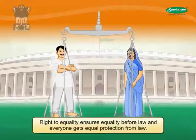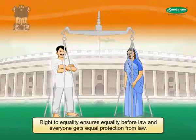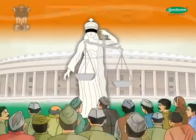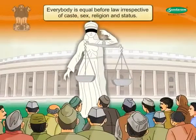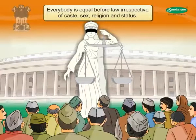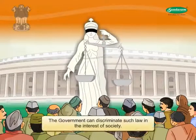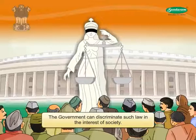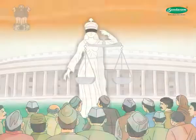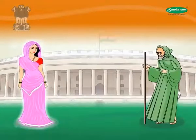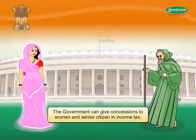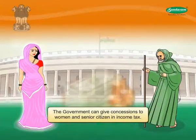Right to equality ensures equality before law and everyone gets equal protection from law. This implies that everybody is equal before law irrespective of caste, sex, religion, and status. However, in exceptional cases, the government can make distinctions in law in the interest of society. For example, the government can give concessions to women and senior citizens in income tax.